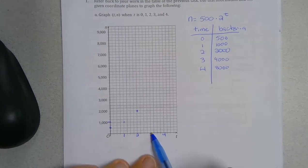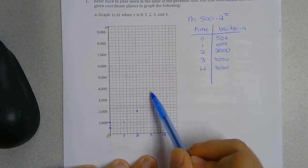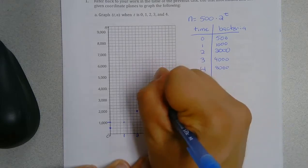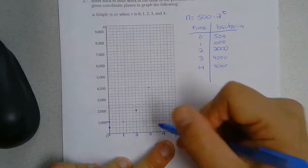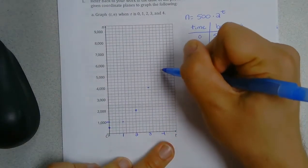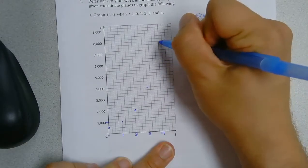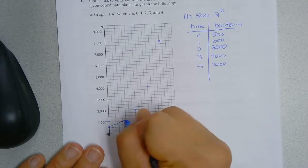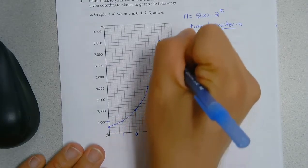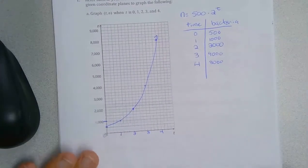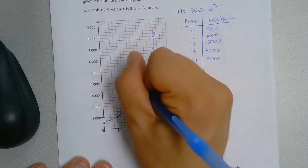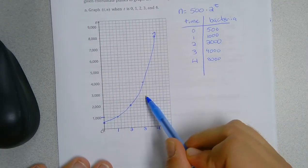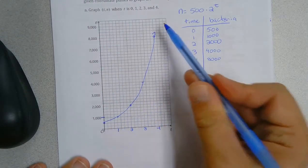And I need to go up to 4,000. And time 4, I go up to 8,000. So if you notice, this is an exponential function, and we see that with a curve.